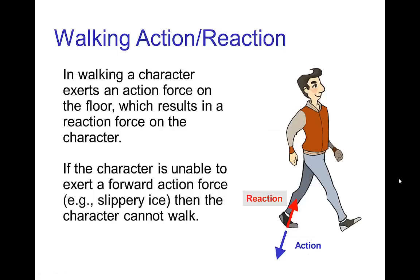Another example where action-reaction applies in character motion is in walking. In walking, the character is exerting a force with the legs, in both the upward direction and in the horizontal direction. In this example, the character is exerting a force down and backwards, and then the reaction force is up and forward — that is one of the stages of the walk cycle.